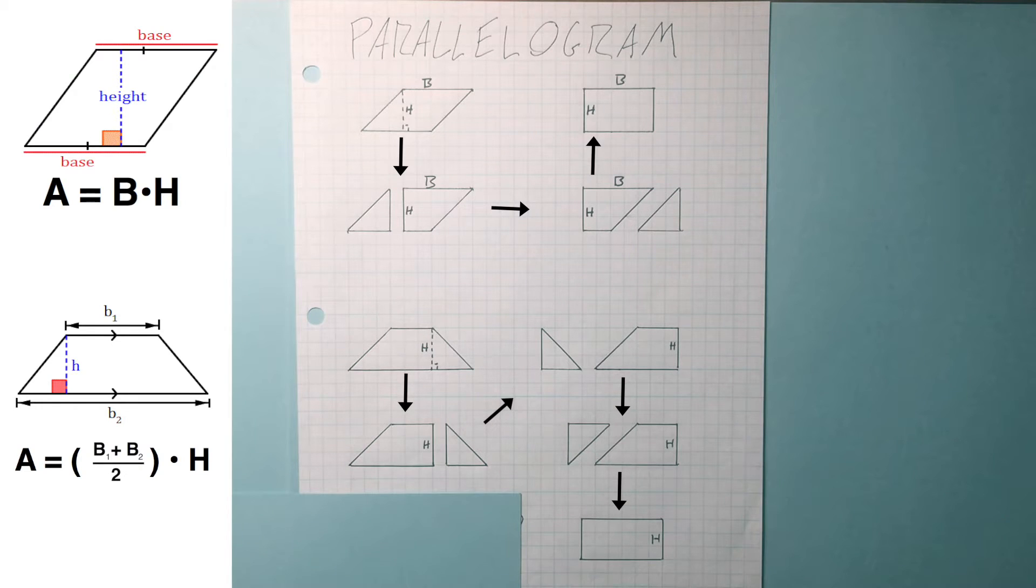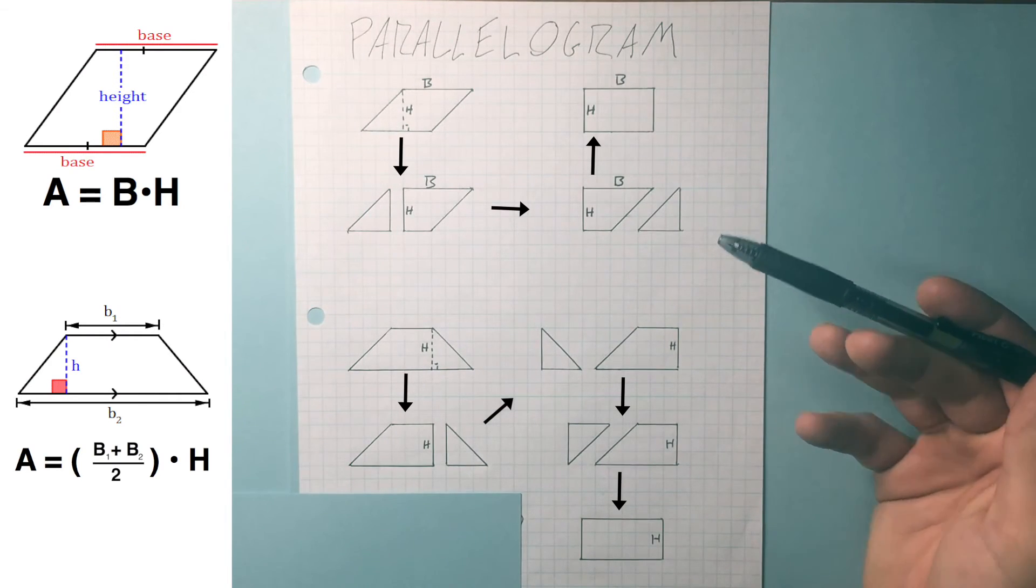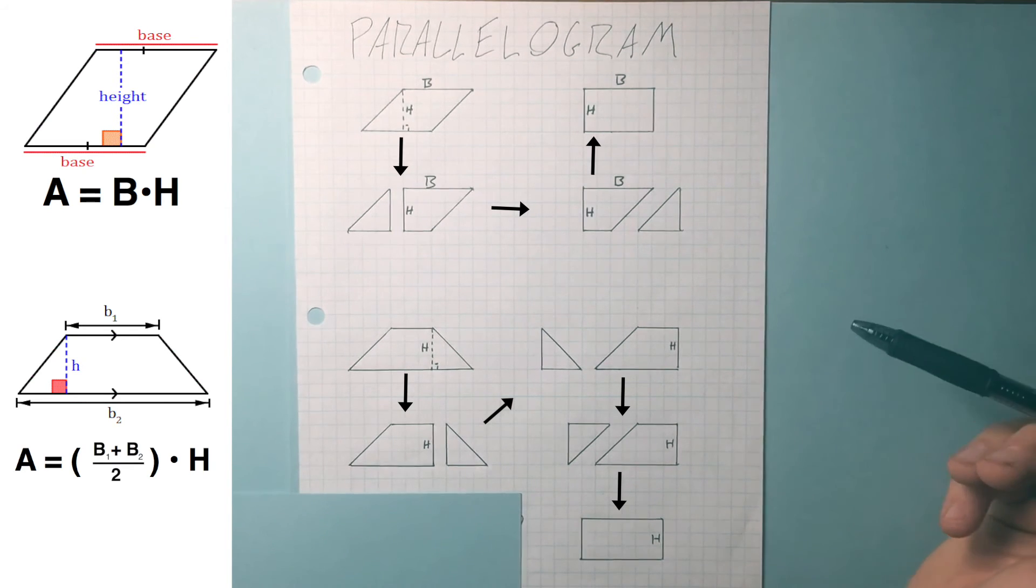So what you're doing with the b1 plus b2 over 2 is you're making them the same, or you're finding the average between the two bases. And once we find what the average of the two bases is, the b1 plus b2 over 2, then we just multiply it by the height, and we're good to go.